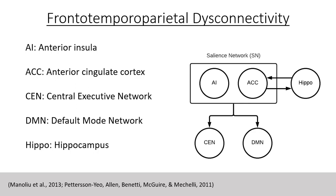The hippocampus is responsible for declarative, or explicit, memory — the memory of facts and events that can be consciously recalled or declared. There are some recent findings suggesting that not only are sub-regions of the hippocampus altered in enduring psychotic illness, but also findings suggesting the possibility of a biomarker and treatment implications for early onset or prodromal psychosis.